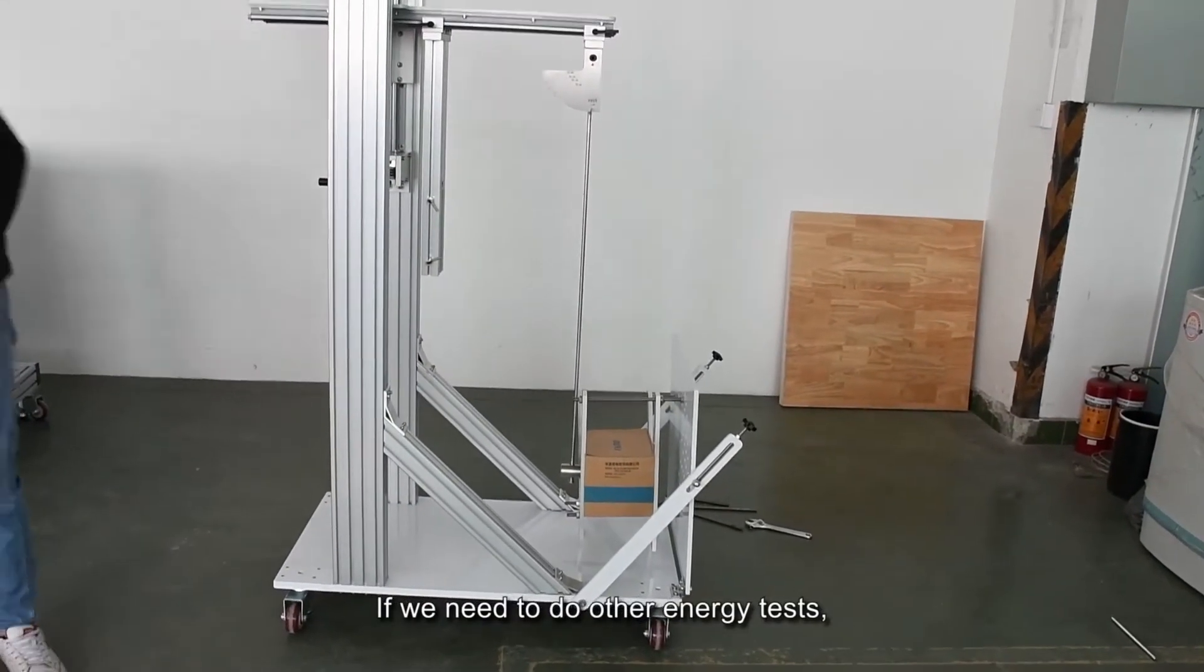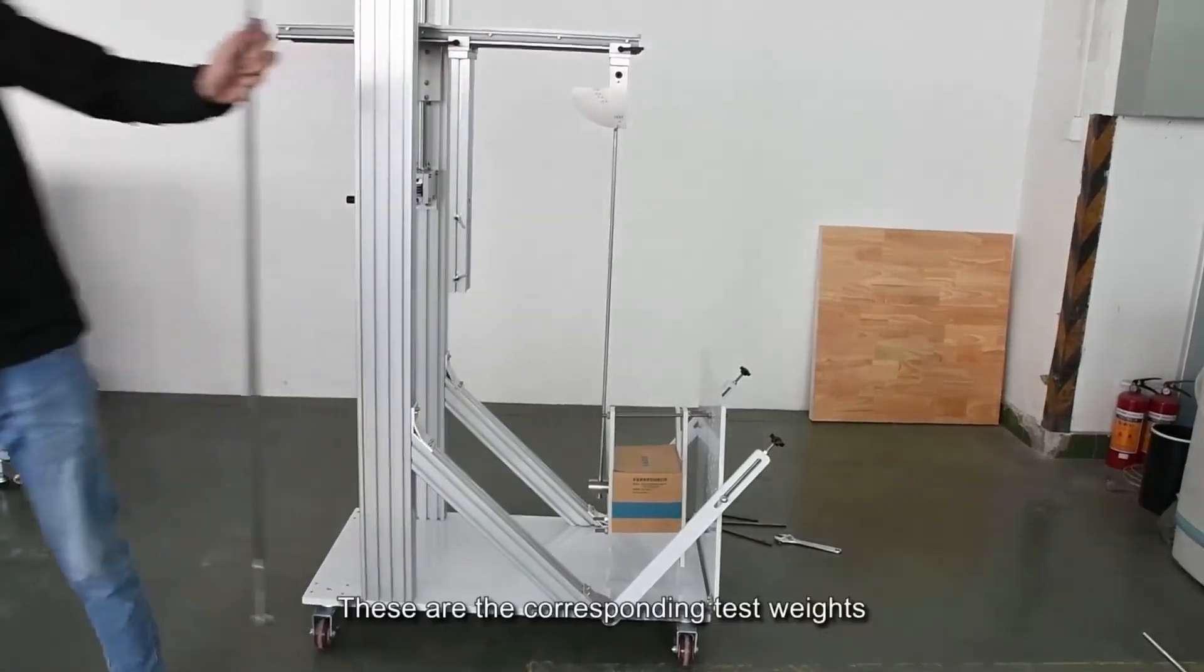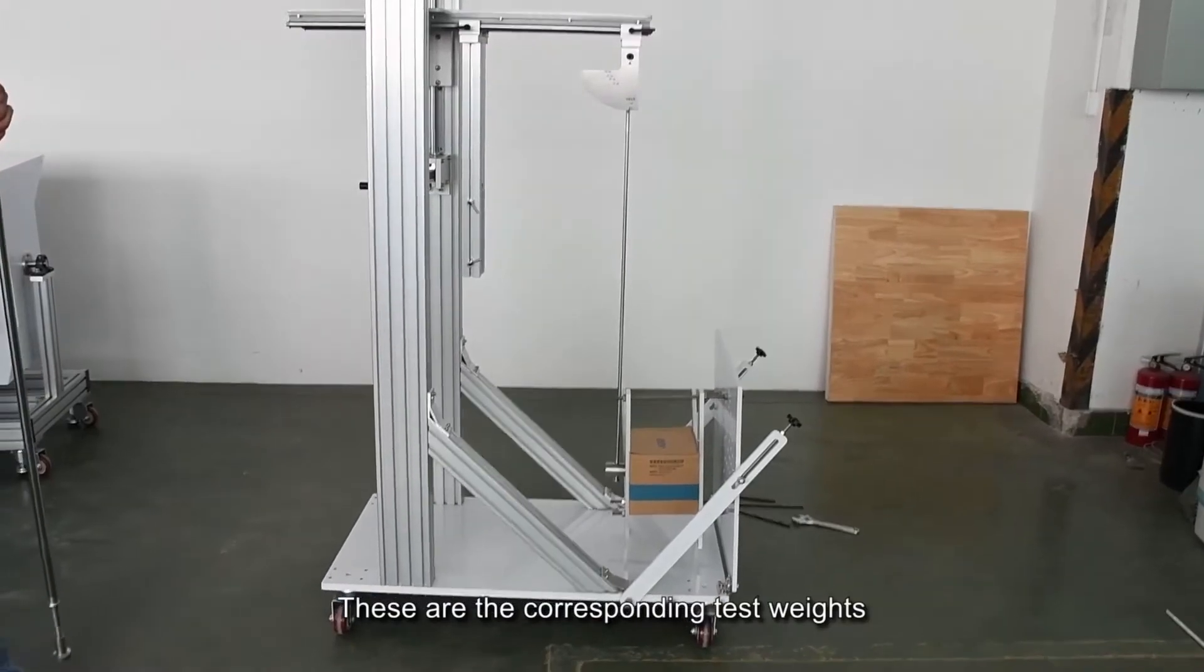If we need to do other energy tests, we can use a thicker hanging rod. These are the corresponding test weights.